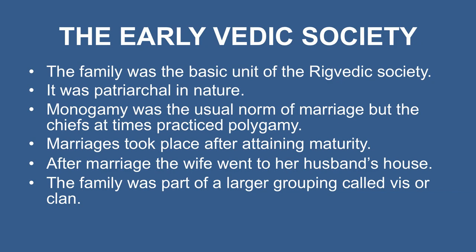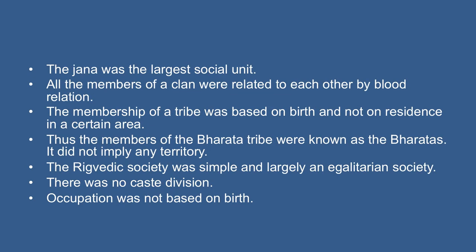The family was the basic unit of the Rig Vedic society — it was patriarchal in nature. Monogamy was the usual norm of marriage but chiefs at times practiced polygamy. Marriages took place after attaining maturity, after which the wife went to her husband's house. The family was part of a larger grouping called Vis or clan. One or more clans made a Jana or tribe, the largest social unit. All members of a clan were related by blood, and membership of a tribe was based on birth, not residence in a certain area.